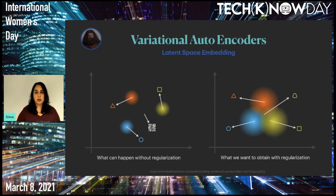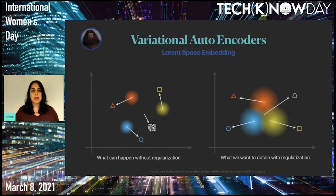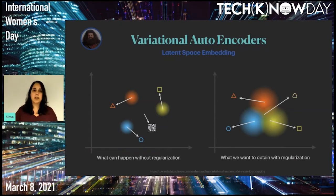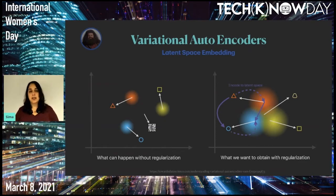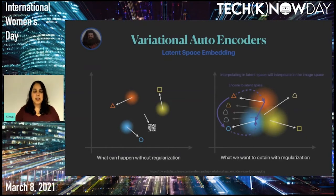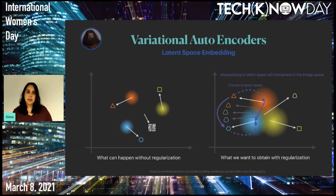This regularization also generates some order in the latent space, and usually similar images are embedded next to each other. This allows us to do some cool tricks. For example, if we want to interpolate between a triangle and a circle, we can encode them into the latent space, interpolate between them there, and use the decoder on different points along that interpolation line to generate new images that interpolate between the triangle and the circle in image space. Pretty cool!